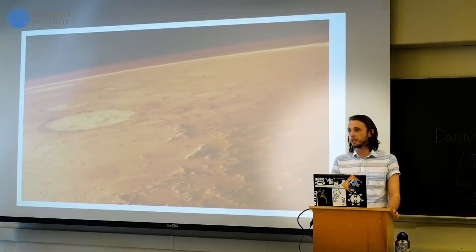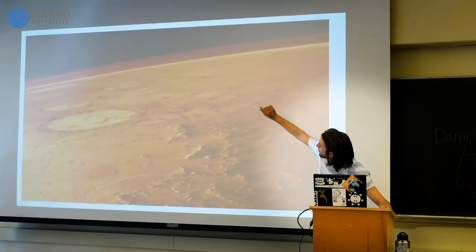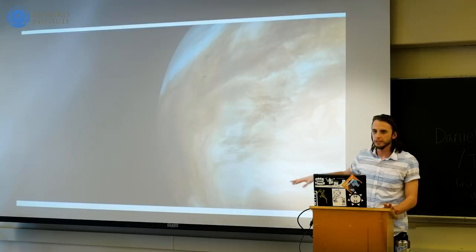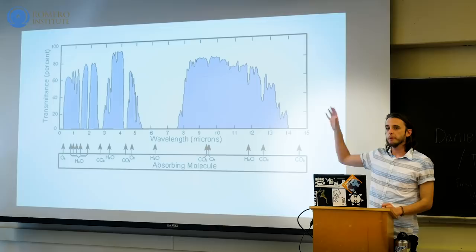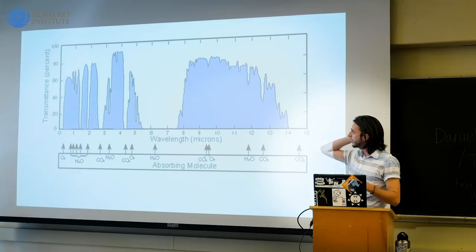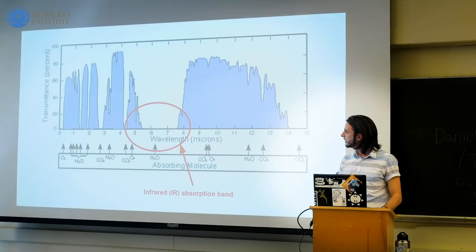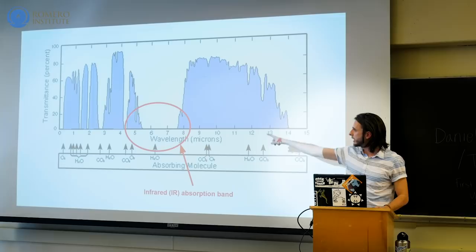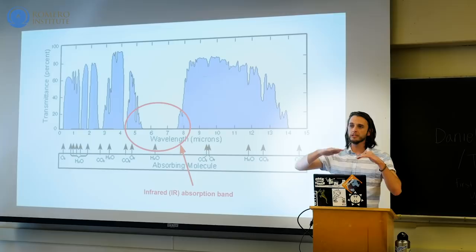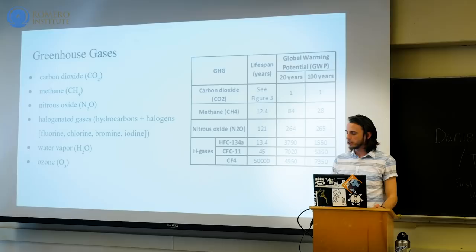On Mars you can see straight down to the planet's surface, with just a very thin layer of atmosphere. On Venus, you can't even see down to the surface. If you were looking down at Earth's atmosphere with a spectral analyzer, you could see all the different wavelengths of photons coming off the planet. Right in the middle there's a big gap — that's right about where the infrared absorption band is. That's where the greenhouse gases are acting, basically blocking that infrared radiation coming off the planet.